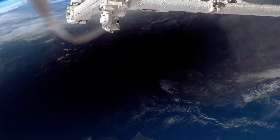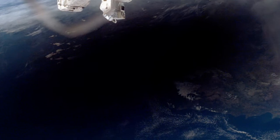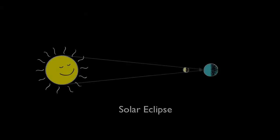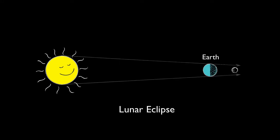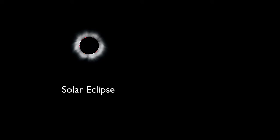Now, there are two types of eclipses: solar and lunar. During a solar eclipse, the moon blocks sunlight from reaching earth. During a lunar eclipse, earth blocks sunlight from reaching the moon. Still can't keep it straight? How about this: during a solar eclipse, the sun disappears. During a lunar eclipse, the moon disappears.